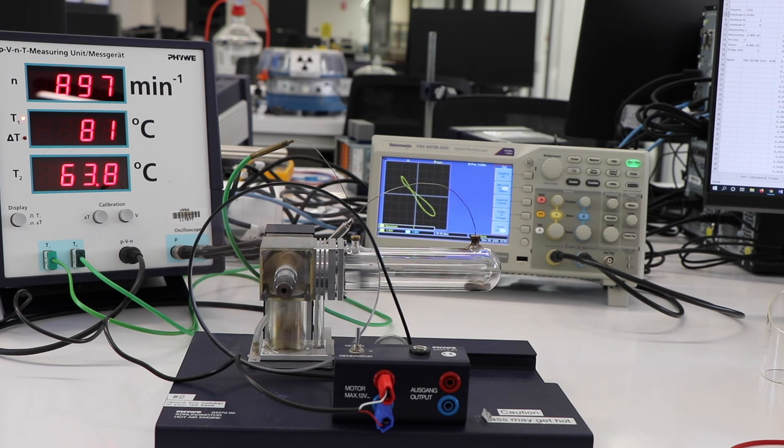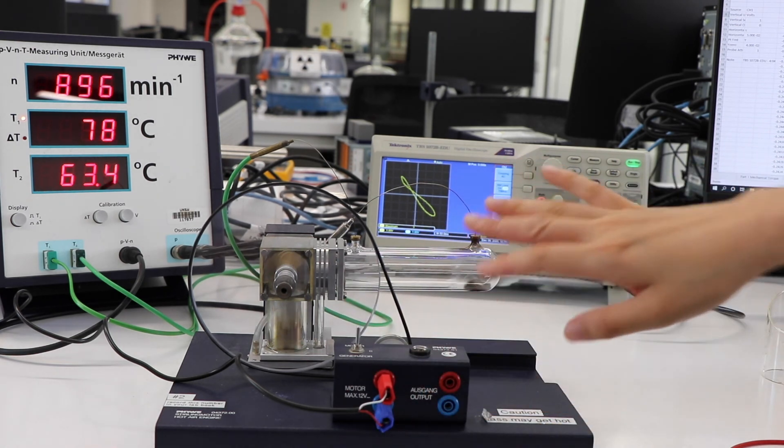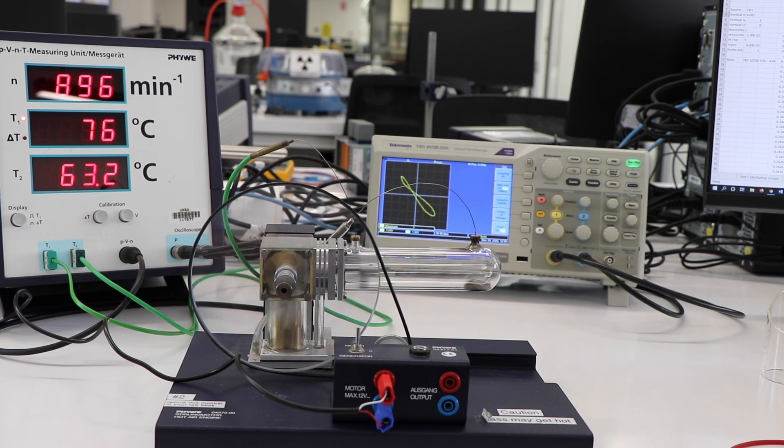So in this part we have it set as a motor. So instead of increasing the temperature we have a power source that's doing work onto the system. And therefore we can reduce the temperatures. And as you can see the temperature is dropping over time.